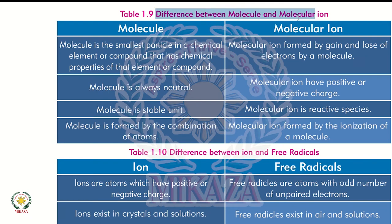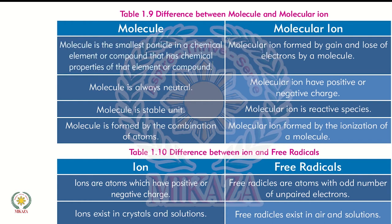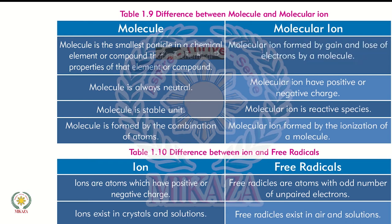Next we have the difference between a molecule and a molecular ion. A molecule is the smallest particle of a chemical element or compound and has the chemical properties of that element or compound. You can also say that two or more atoms, or even one type of atom, form a group and combine chemically to give specific chemical properties. A molecular ion is formed by the gain or loss of an electron by a molecule.